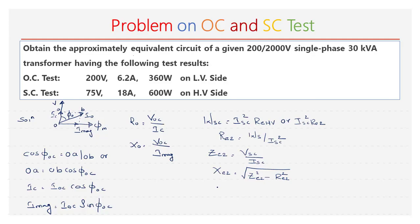The resistance and reactances mentioned here are with respect to the HV side. We can shift to the LV side using the formula: RE1 is equal to RE2 divided by k squared. Similarly, XE1 can be written as XE2 divided by k squared.